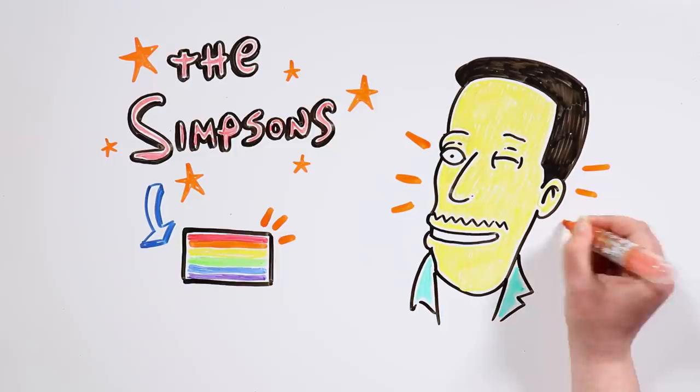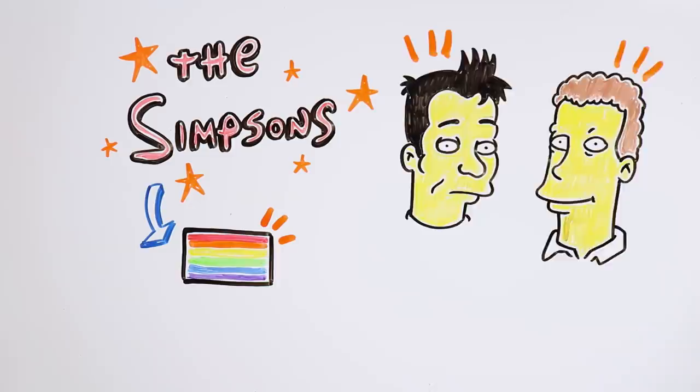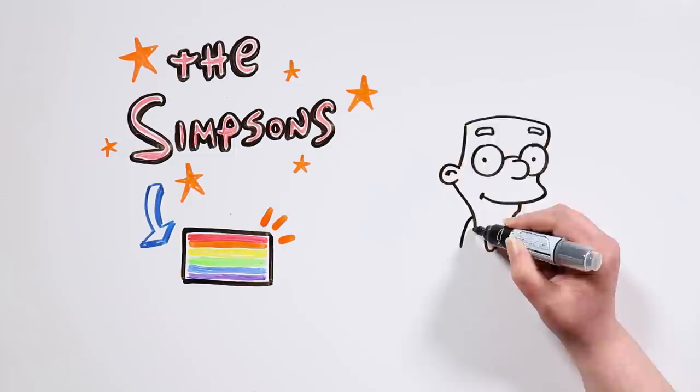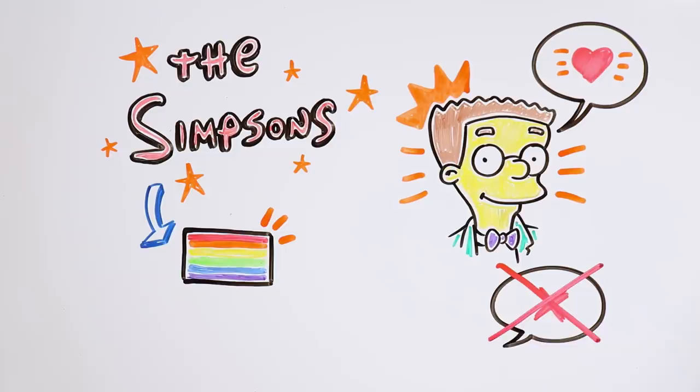The Simpsons has also shown the gay couple Grady and Julio, an episode where Springfield legalized homosexual marriage, Marge's lesbian sister Patty, and Smithers of course, a character who ends up coming out of the closet and declaring his love for Mr. Burns. The episode was interpreted by many as a naturalization of the character, and put an end to more homophobic references.